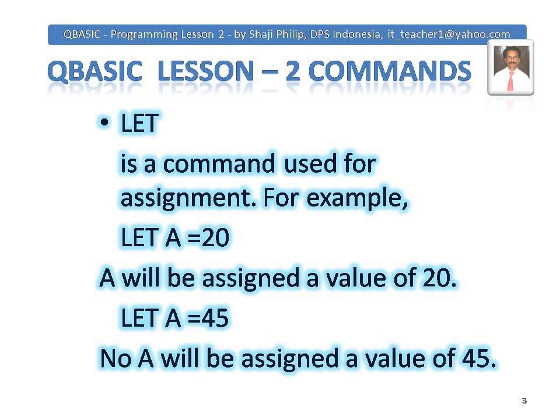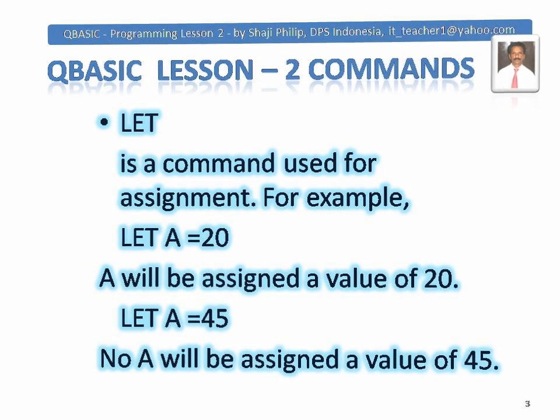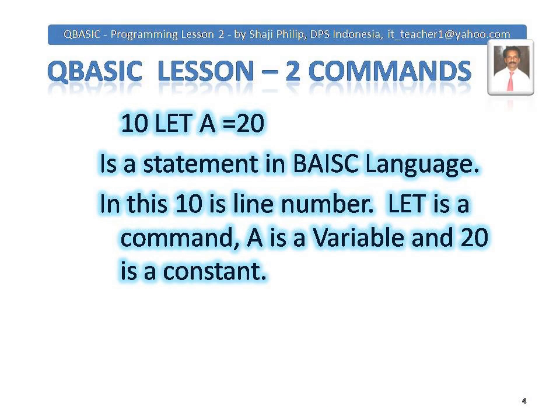Again, if you assign another value to a — LET a = 45 — now the value of a is changed to 45. a is a variable; the value of a is changed again. When giving statements in BASIC language, we use line numbers at the beginning of every line. Usually we give lines 10, 20, 30, 40 in steps of 10. So if you want to give this command as a statement in the QBasic editor, you give: 10 LET a = 20. This is a valid statement. 10 is the line number, LET is the command, a is the variable, and 20 is the constant.